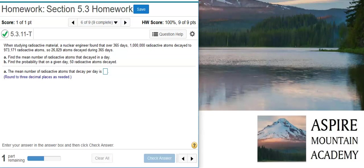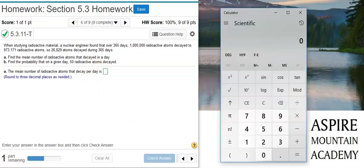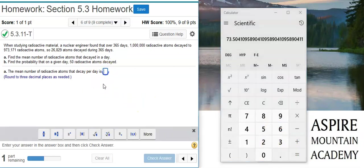Part A wants us to get the mean number of radioactive atoms decayed per day, so we take the total number of atoms decayed and divide it by the total number of days. I whip out my calculator. Total number of atoms decayed, listed here in the problem statement, is 26,829. Total number of days is 365, so here's my mean number. I'm asked to round to three decimal places.